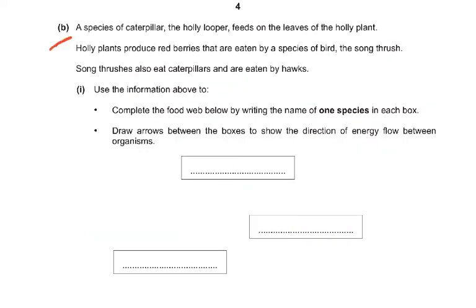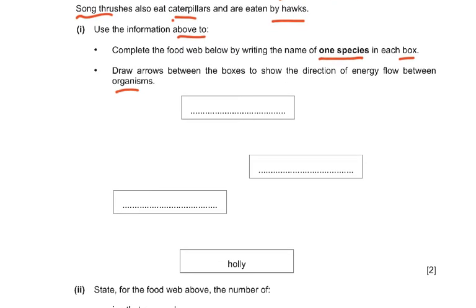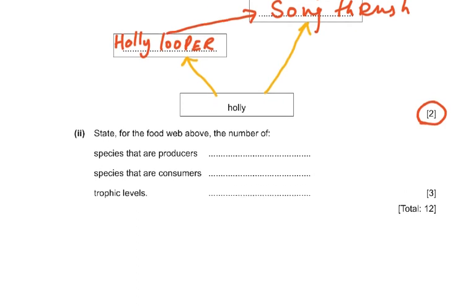Part B: a species of caterpillar called the holly looper feeds on the leaves of the holly plant. Holly plants produce red berries eaten by the song thrush. Song thrushes also eat caterpillars and are eaten by hawks. Use this information to complete the food web by writing species names in each box and drawing arrows to show the direction of energy flow. The correct organisms are: holly, holly looper, song thrush, and hawk, with arrows showing energy flow correctly — this gives you two marks.